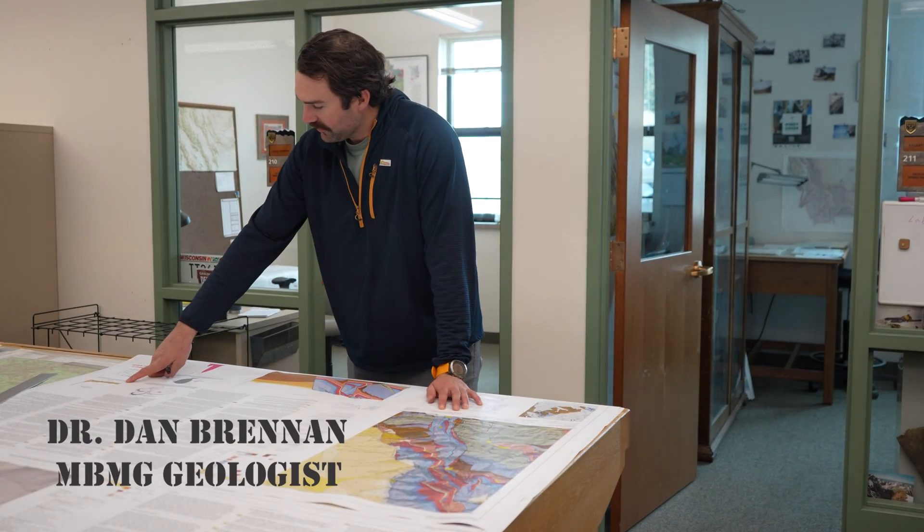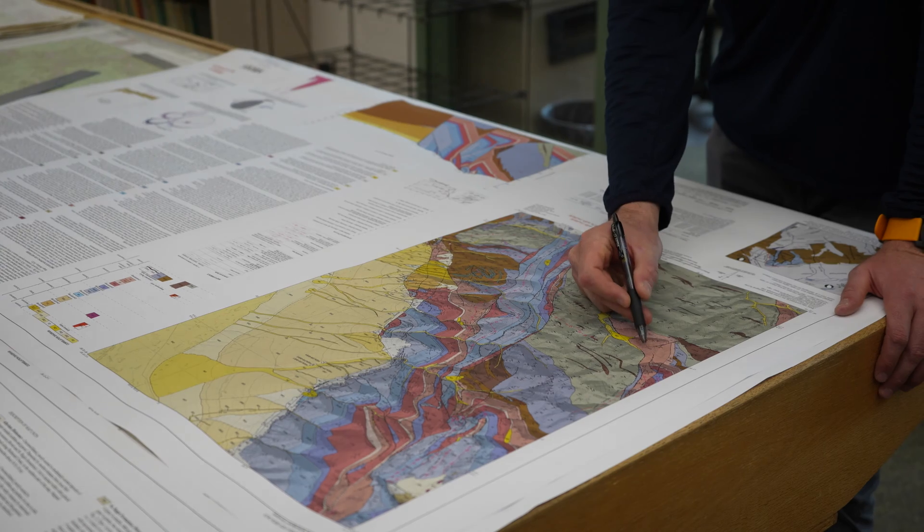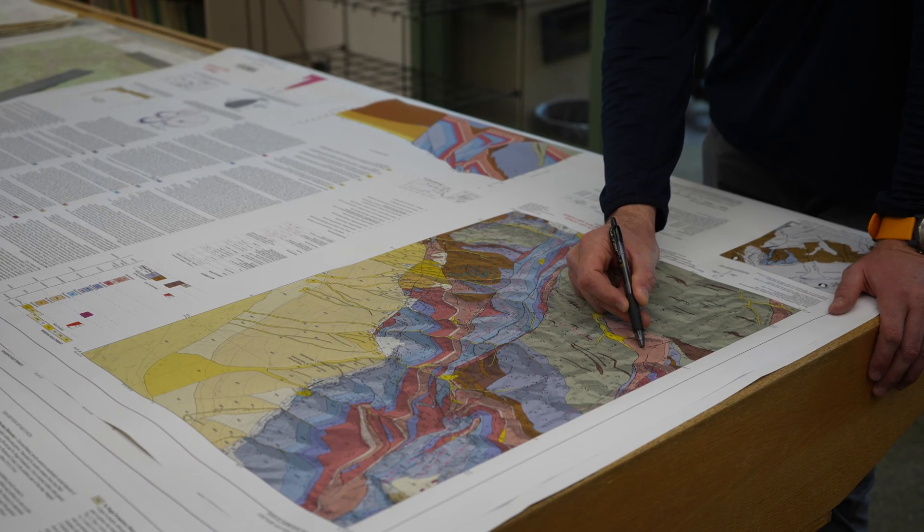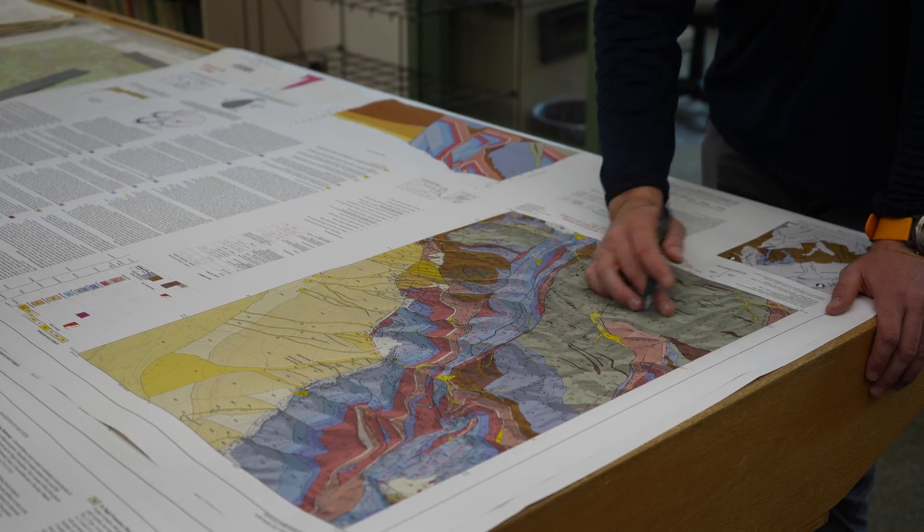At the Montana Bureau of Mines and Geology, we make geologic maps. A main component of this endeavor is determining the age of different rock units. For some rock units, we hunt for an amazing little mineral called zircon.